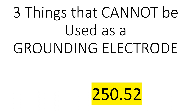Hey everyone, welcome back. I am the Electrical Code Coach, and today we're going to cover the three things that cannot be used as a grounding electrode. We're going to be in NEC section 250.52. It's a very short piece of 250 — highly recommend you go over and read it. You'll actually learn quite a bit. But first, let's clarify what we're talking about today.